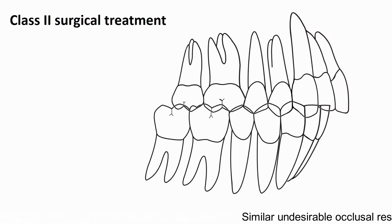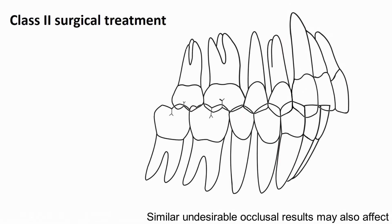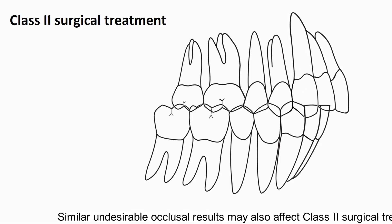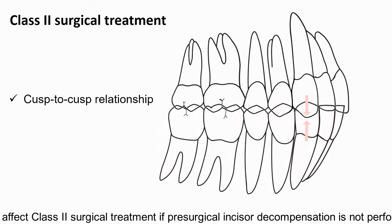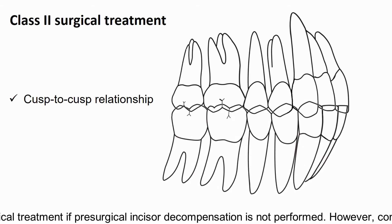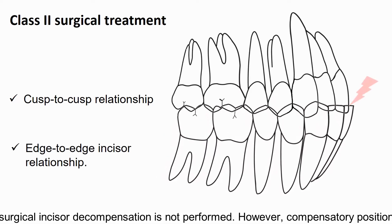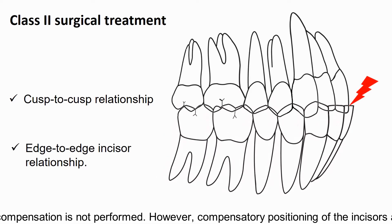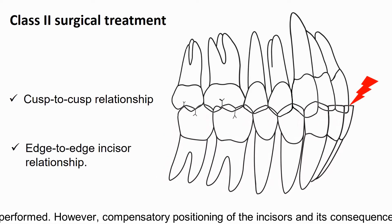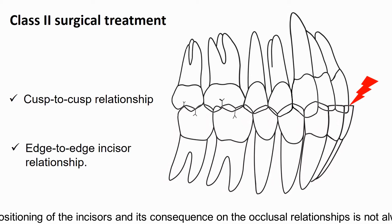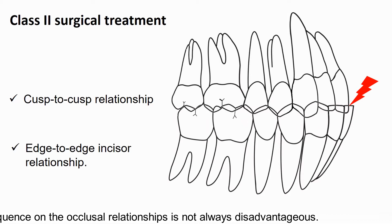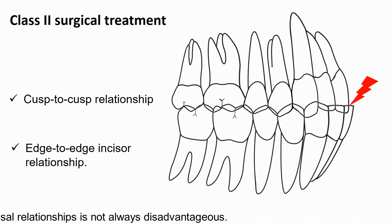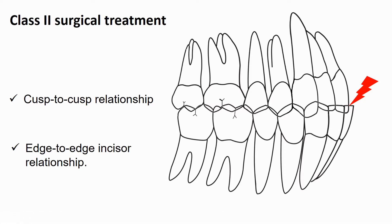Similar undesirable occlusal results may also affect Class II surgical treatment if pre-surgical incisor decompensation is not performed. However, compensatory positioning of the incisors and its consequence on the occlusal relationships is not always disadvantageous.